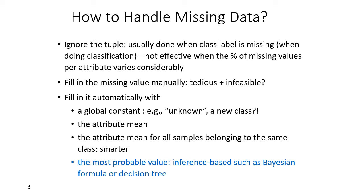The second option is filling in the missing value manually — a tedious and often infeasible job. Alternatively, we can fill automatically with a global constant like 'Unknown', or use the attribute mean — the average of all values for that attribute. A smarter approach is to use the attribute mean for all samples belonging to the same class, since samples in the same class have similar attributes. The last and most important method is inferring the most probable value through calculations and filling that in.